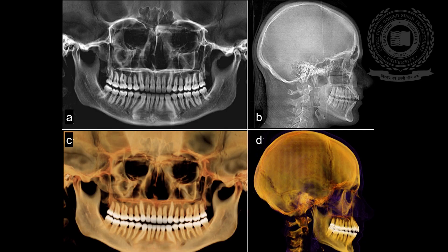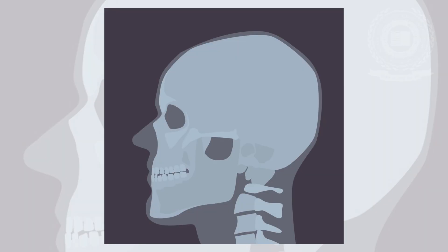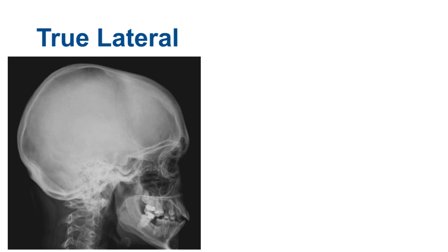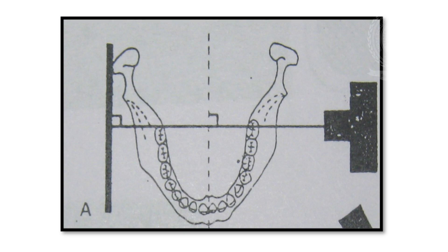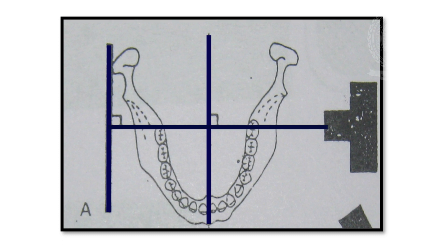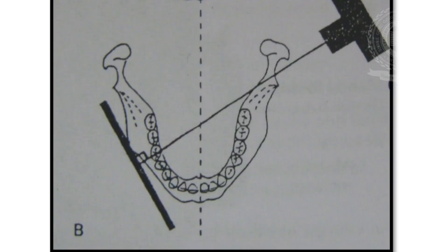Now we move on to the technique of lateral radiography. As the name suggests, lateral radiography focuses on the lateral aspect of the object. There are two techniques: true lateral positioning or oblique lateral positioning. In true lateral, the film and the sagittal plane of the patient's head are parallel to each other, and the x-ray beam is perpendicular to both the film and the patient's sagittal plane. In oblique lateral positioning, the film and sagittal plane are not parallel, and the x-ray beam is perpendicular to only the film but oblique to the sagittal plane of the patient.